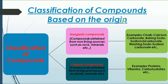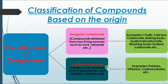Classification of compounds based on origin: compounds can be classified into two major types — inorganic compounds and organic compounds. Wherever you come across the word 'organic,' it signifies life. When any compound is derived from living sources such as plants and animals, those compounds are called organic compounds. Whereas when compounds are derived from non-living things like raw minerals and rocks, we call them inorganic compounds.